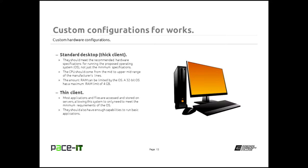The standard desktop should meet the recommended hardware specifications for running the proposed operating system — the recommended specifications, not the minimum. Your CPU should come from the mid to upper mid range of the manufacturer's line. The amount of RAM installed will be limited by the type of operating system you're using. A 32-bit operating system has a maximum RAM limit of 4 gigabytes — keep that in mind.